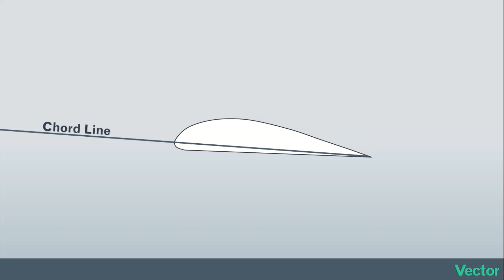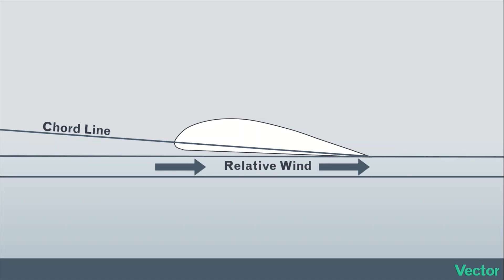The cord line is just an imaginary line that gets drawn from the trailing edge through the leading edge. The relative wind is just the airflow as it passes over the airfoil. Whatever direction the airflow is coming from and passing over the airfoil, that's the relative wind.